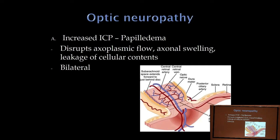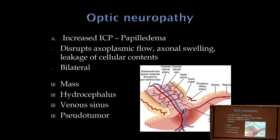Increased intracranial pressure causing papilledema is 99.9% of the time bilateral. Causes of increased ICP include brain tumors, anything with a lot of swelling, hydrocephalus, cerebral venous thrombosis — where arterial blood can't drain so pressure builds up — and idiopathic intracranial hypertension (pseudotumor cerebri). These are common causes with the objective finding of papilledema.